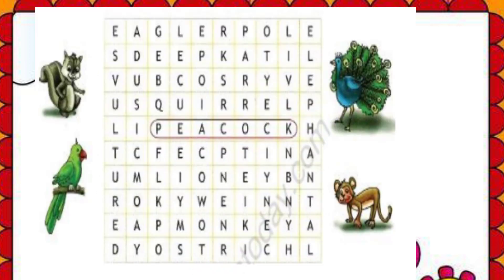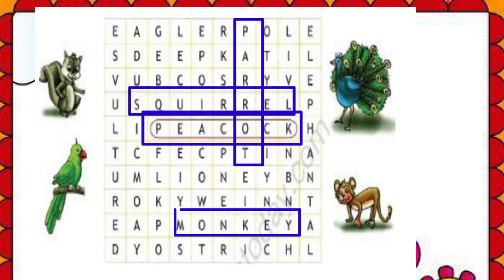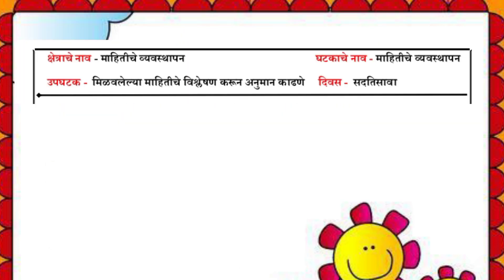Next activity: find out birds and animals names from the grid. Squirrel, Parrot — find Parrot, Peacock, and Monkey in the grid.